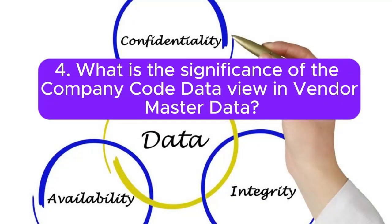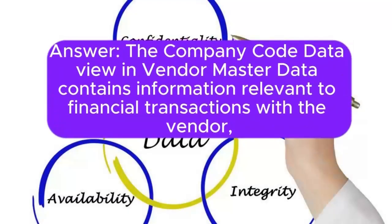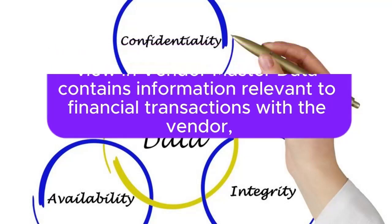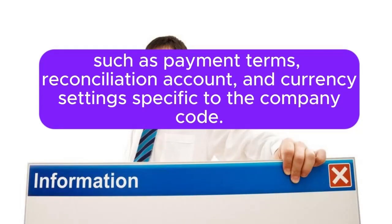4. What is the significance of the company code data view in Vendor Master Data? Answer: The company code data view in Vendor Master Data contains information relevant to financial transactions with the vendor, such as payment terms, reconciliation account, and currency settings specific to the company code.